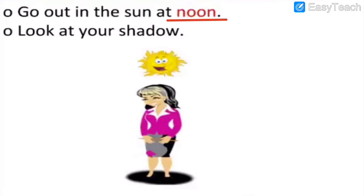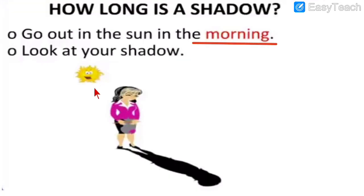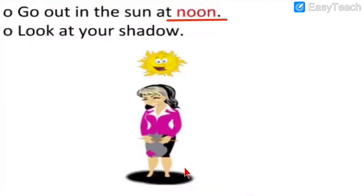Go out for just a minute and look at your shadow at noon — the shadow will be very small. In the afternoon, the sun is exactly above our head. In the morning, the sun is still rising and not yet above our head, so the shadow is long. But in the afternoon you can see how small the shadow has become.